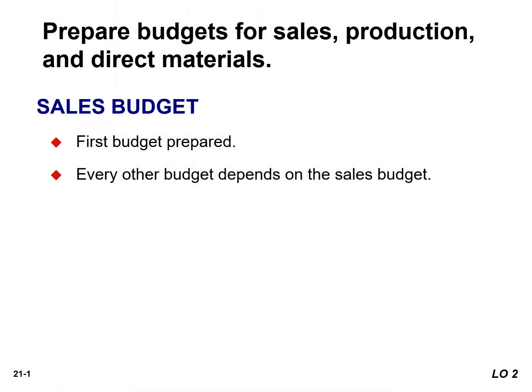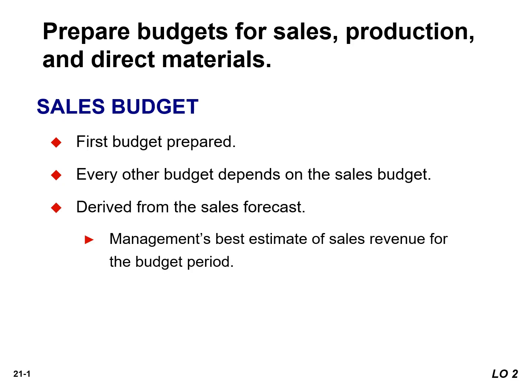The sales budget is prepared first. Each of the other budgets depend upon the sales budget, which is derived from the sales forecast. It represents management's best estimate of sales revenue for the budget period. An inaccurate sales budget may adversely affect net income.